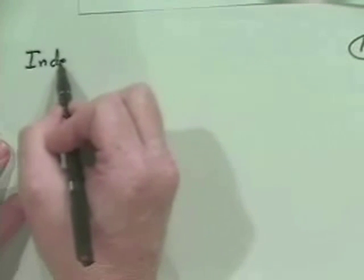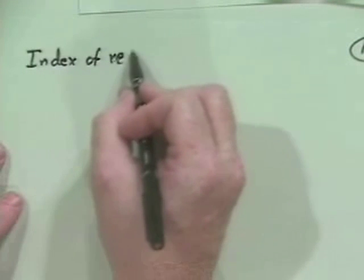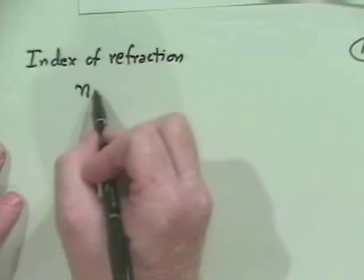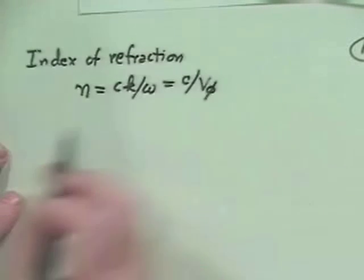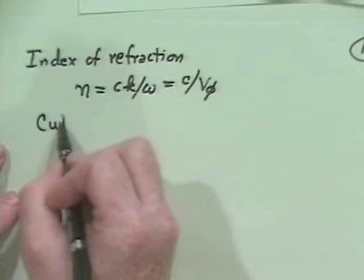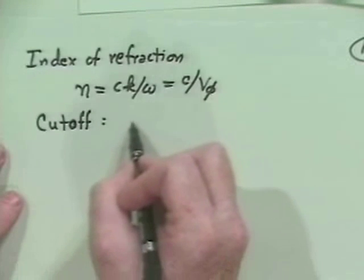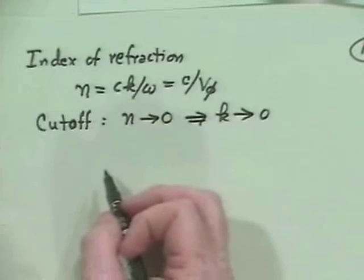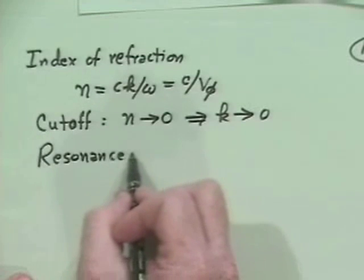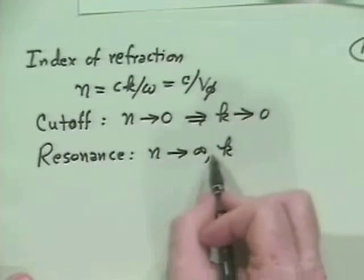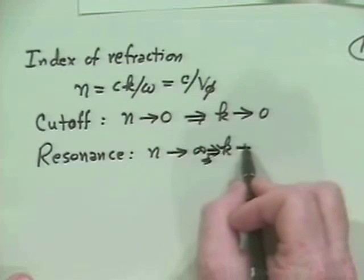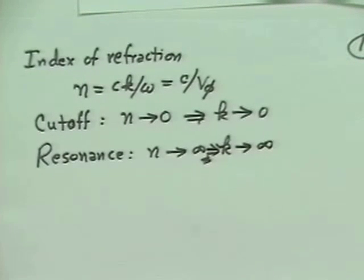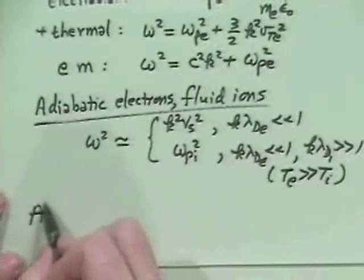Now, some other sort of general properties that we got into there were that we had the so-called index of refraction of waves moving through a medium. And what that is is n is equal to ck over omega equal to c over the phase velocity. And we talked about and used cutoffs, and that was the point at which the index of refraction goes to zero, which implies that k goes to zero. And then finally, we had resonance where n goes to infinity, and at that point k, this implies actually k goes to infinity.